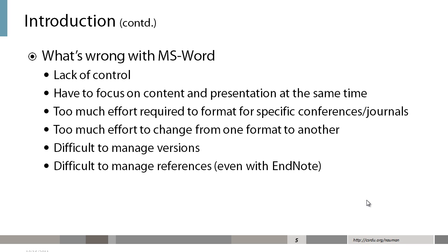More about why we don't want to use MS Word. The major problem with MS Word is the lack of control. When you are creating complex documents such as a research paper in two-column format — with floating figures, listings, and algorithms — it's very difficult to manage how the different content flows together. You have to focus on content and presentation at the same time, and that's not a good idea in general. That's why you have HTML separated from CSS.